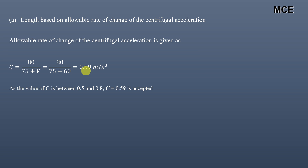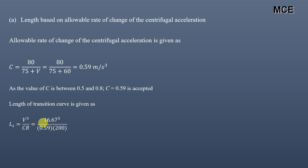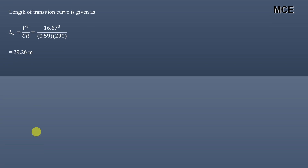The length of the transition curve based on the allowable rate of change of centrifugal acceleration is given as L = V³ / (C × R), where V = 16.67 m/s, C = 0.59, and R = 200 m. This gives L₁ = 39.26 meters.